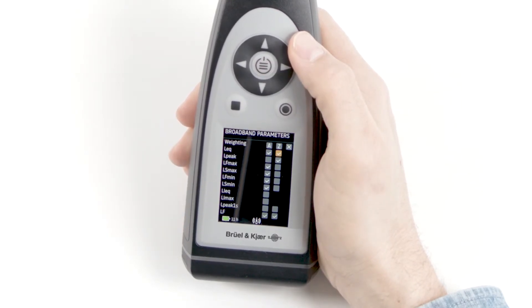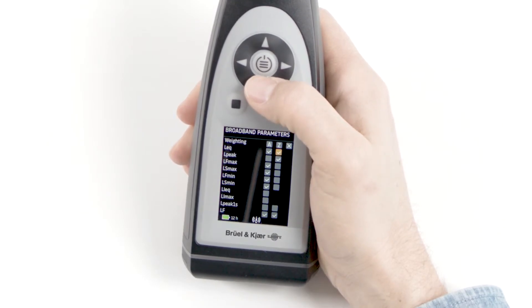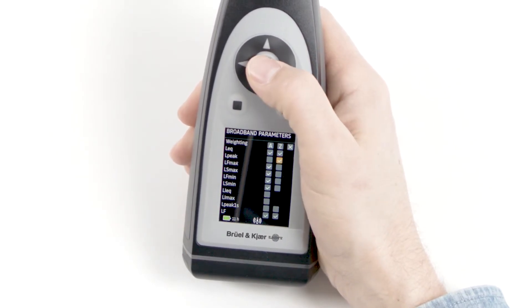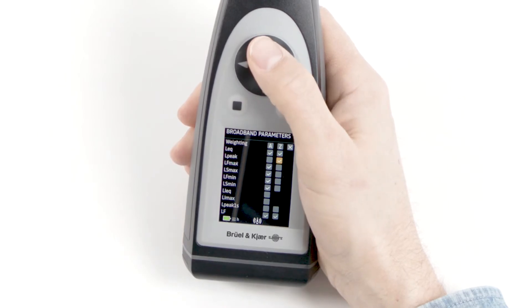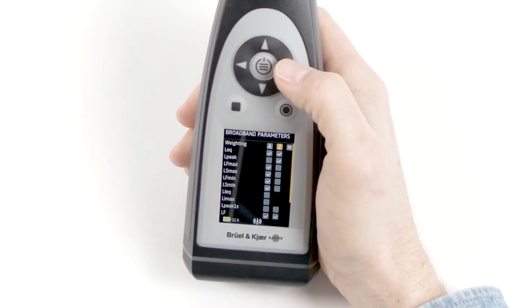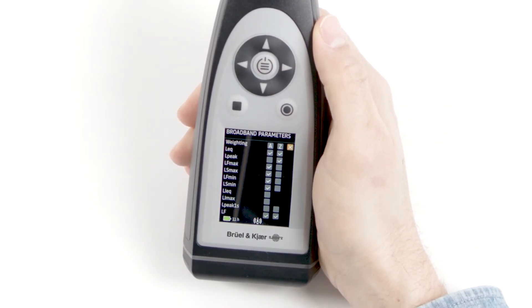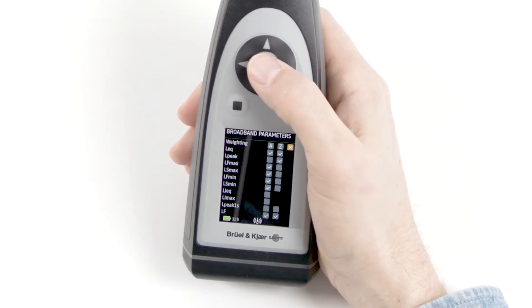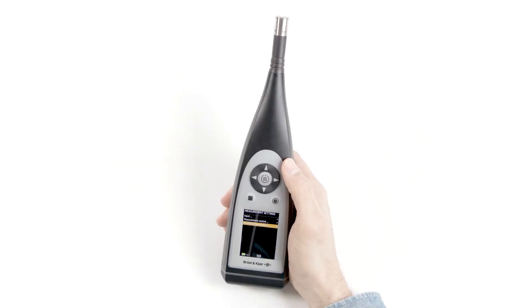Similarly, to turn parameters on and off, I move my cursor to the parameter and push the center button to toggle that parameter on and off. When I've finished choosing parameters, I move my cursor to the X and push the center button again. And now we're ready to measure.